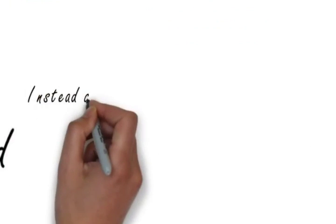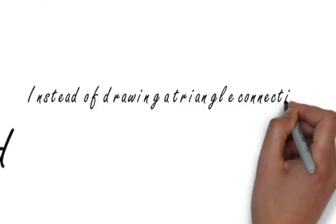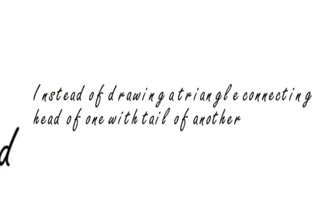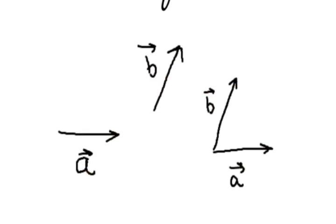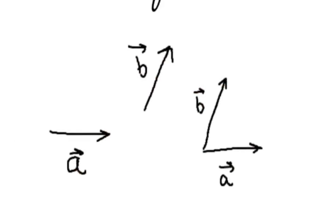Instead of drawing a triangle connecting head of one with the tail of another, let's say there are two vectors, a vector and b vector we want to add. We will connect the tail of the two vectors.